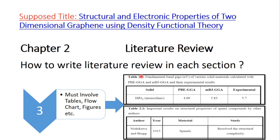When writing each section of the literature review, one should also include tables, flowcharts, and figures. Literature review is not about writing text only — present information in tables. For example, Table 2.3 shows important studies on structural properties by other authors, with columns for author, year, material, and study. This can effectively increase the number of pages in your research proposal or synopsis.